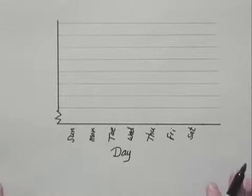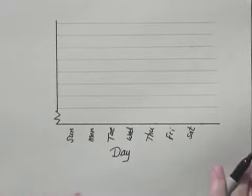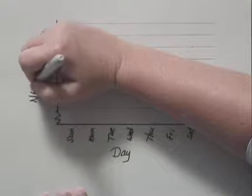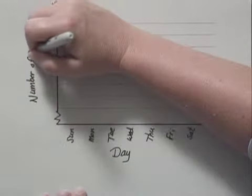The vertical scale will show us the number of books, so let's label that before we figure exactly how to scale it: 'Number of Books', or the number of books checked out.